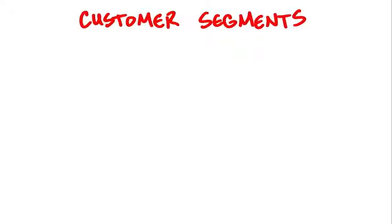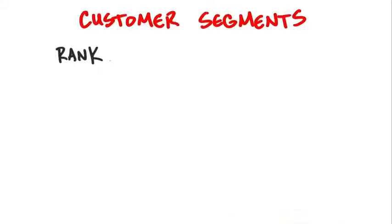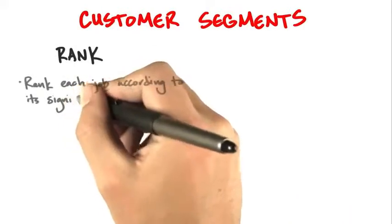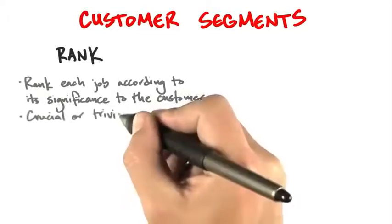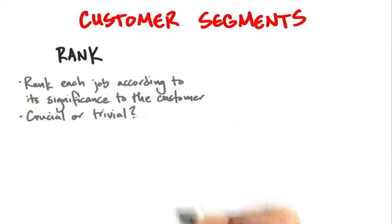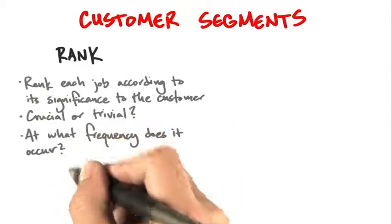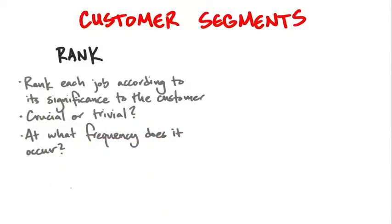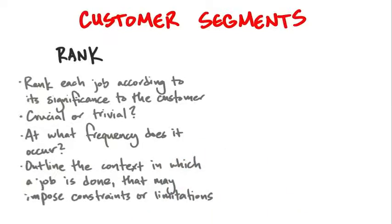A simple way to start with your customer segment hypotheses is to rank each job according to what you believe is its significance to the customer. On day one, you get to guess: is it crucial or trivial? Take a guess about how frequently it occurs, and outline what specific context a job gets done.